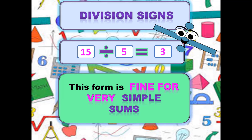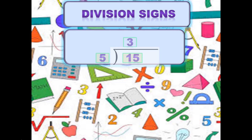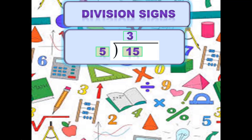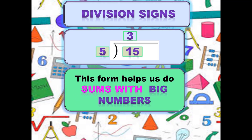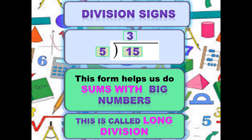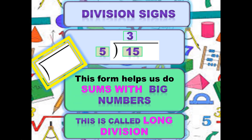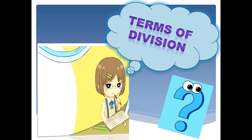Linear form ہم تب use کرتے ہیں جب division کے simple sums solve کرنے ہوں۔ یہاں پہ ایک اور form ہے جس میں question straight line میں نہیں لکھا ہوا۔ اس طرح کی form سے ہم big numbers کو easily divide کر سکتے ہیں — this form helps us do sums with big numbers۔ اسے long division کہتے ہیں اور long division میں division کا وہ والا sign use کرتے ہیں۔